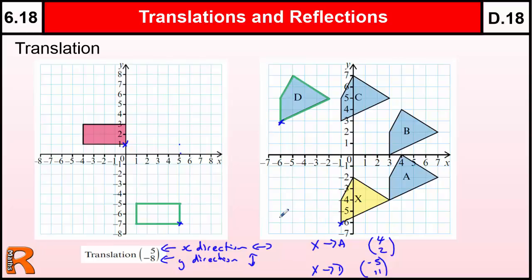Always described by the word translation, and a vector, which is like a coordinate, no commas or anything, just a bracket, with the x direction and the y direction, one above the other.